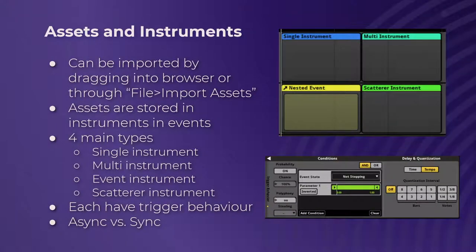Moving on to what events are made of: assets and instruments. You import assets by dragging files into the asset browser, or you right-click and click Import, or go to File and then Import Assets. Assets are basically just audio files that you then put into events. But how do you put them in events? They are stored in things called instruments, and there are four main types: single instruments, multi-instruments, event instruments, and scatterers.